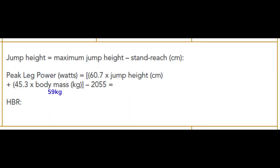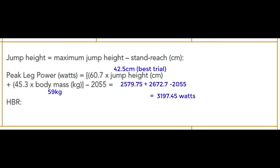Now we can calculate peak power in watts. If this participant weighed 59 kilograms and had a best trial of 42.5 centimeters — which is their maximum jump height minus their standing reach — we work out the equation, summate those two values, and minus the constant of 2,055 to get 3,197 watts.